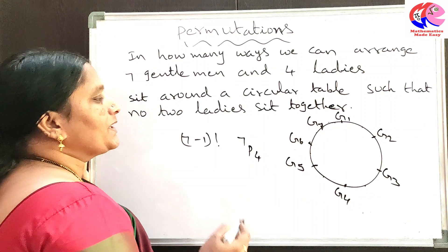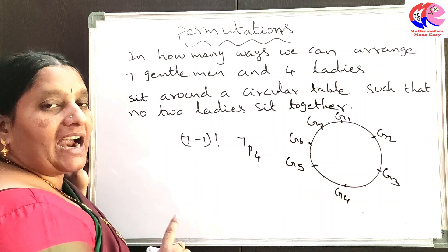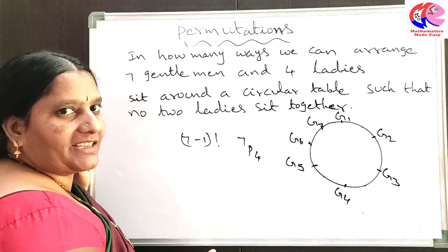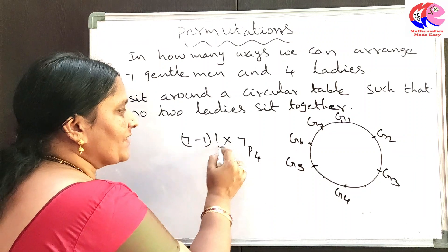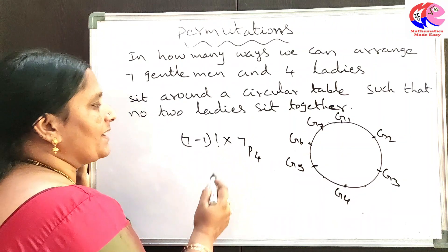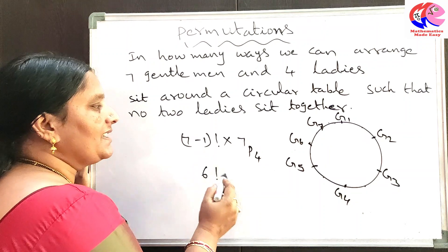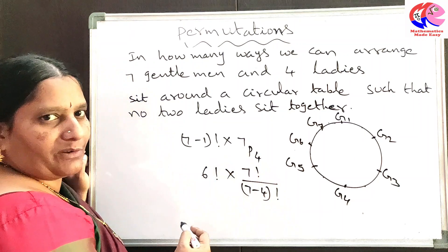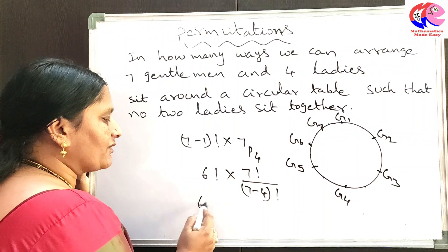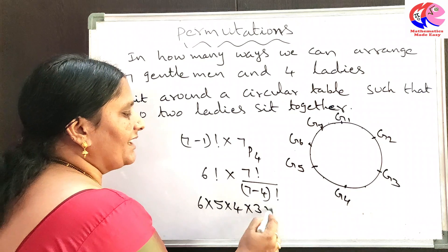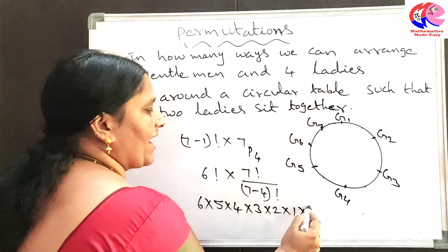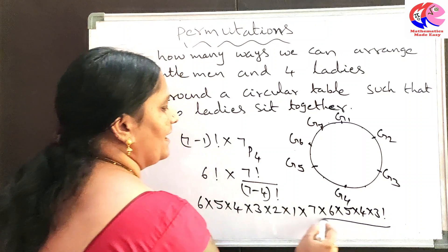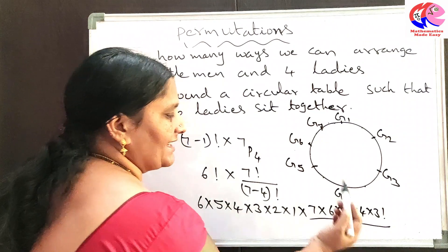According to the principle of succession, if the first work can be done in M ways and the second work can be done in N ways, then the total number of ways is M × N. So the total is (7 − 1)! × 7P4, which equals 6! × (7! / (7 − 4)!) = 6! × 7 × 6 × 5 × 4 × 3! / 3!.